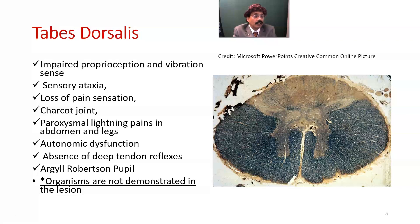Charcot joint due to lack of nerve supply may be caused by neurosyphilis, diabetes, or any other chronic condition like spina bifida. There are also paroxysmal lightning pains in the abdomen and legs, and autonomic dysfunction — there may be retention of urine, soiling, and dysfunction of the anal sphincter.